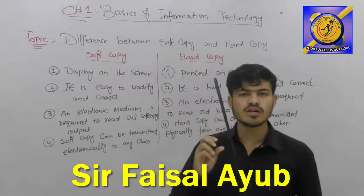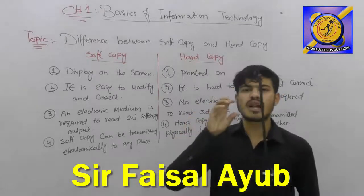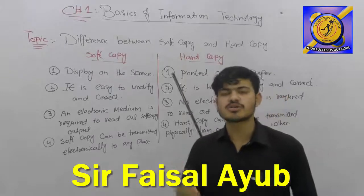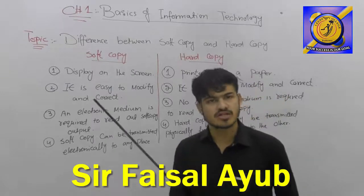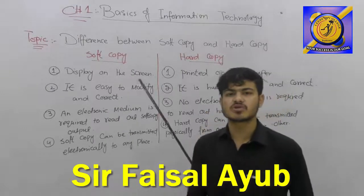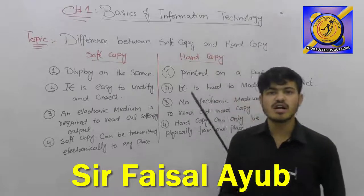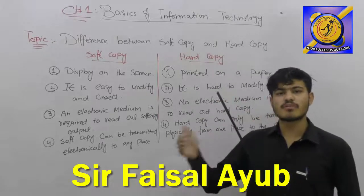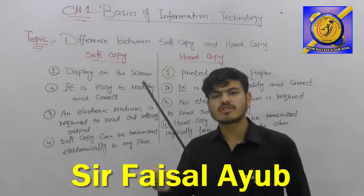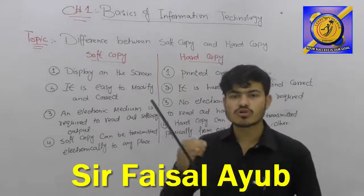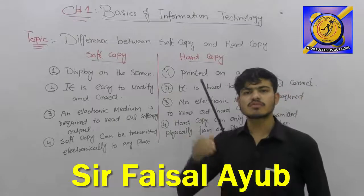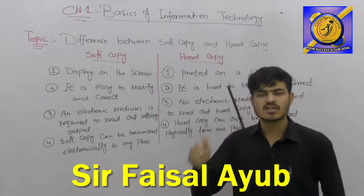Soft copy cannot be physically touched by a human directly. Hard copy, being on paper, can be physically and easily touched. The reason is that hard copy is on paper, which is a physical medium, while soft copy exists inside the computer.